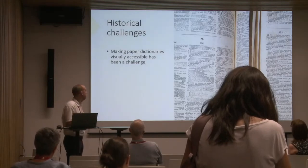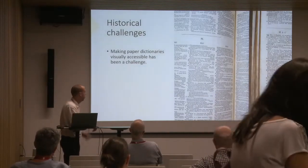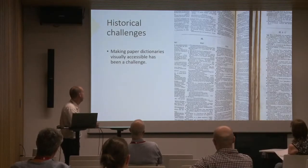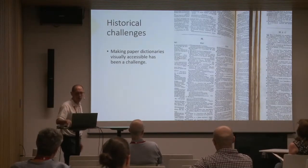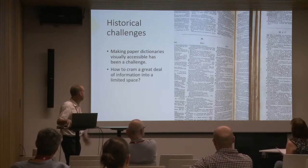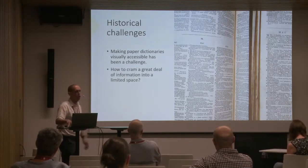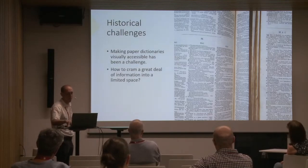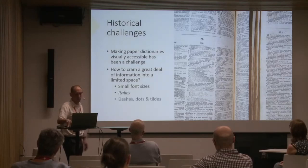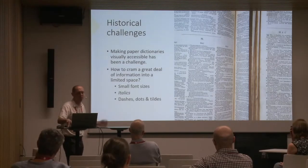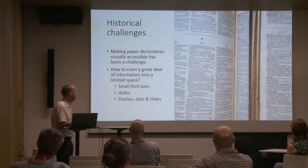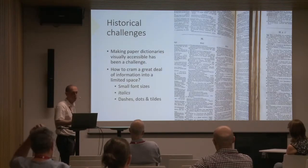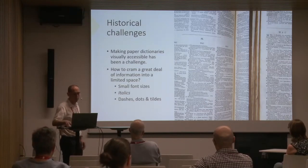So historically, making large general-purpose paper dictionaries visually accessible has been a challenge. You've got this problem of a limited page count, but a great deal of information to cram into this space. So how do you do this? Small font sizes, italics, dots, dashes, tildes, other space-saving conventions, all of which are particularly difficult for people with visual impairments to perceive.